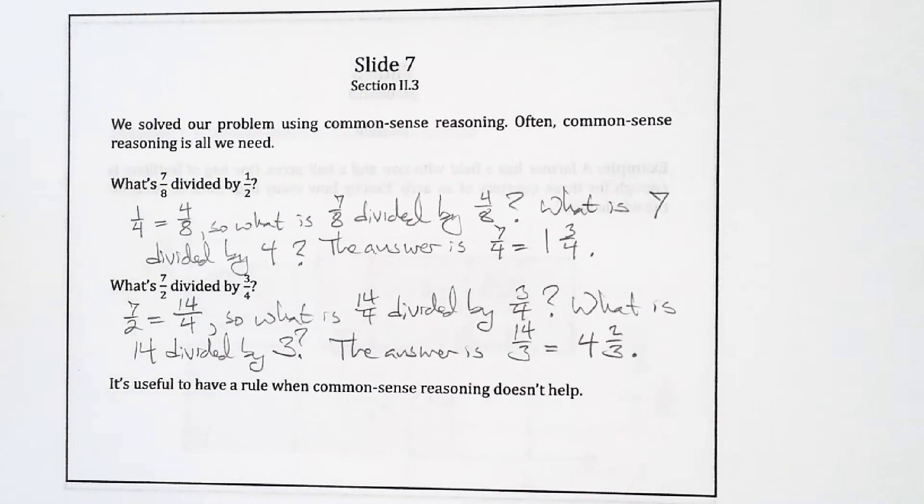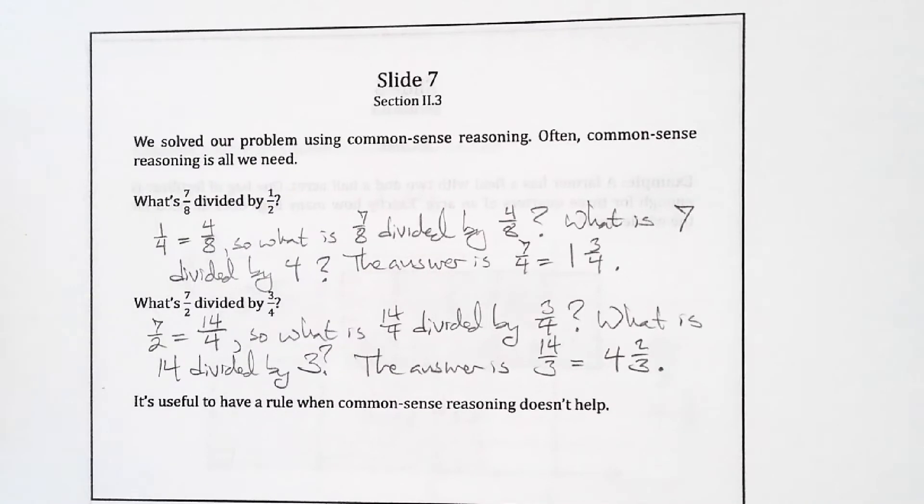This is the third mini lecture for section 6.3. So we just talked about how we can usually use common sense reasoning to perform division problems, but for fractions that involve large numerators or denominators, or maybe times when we want to do it more quickly, it's helpful to have a rule.